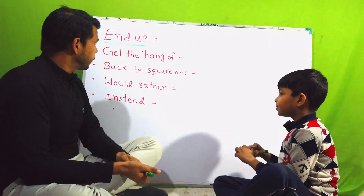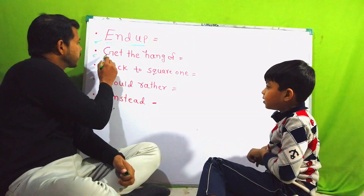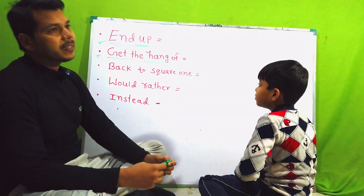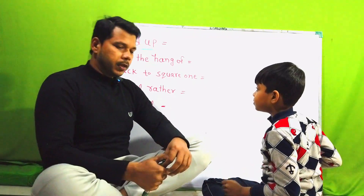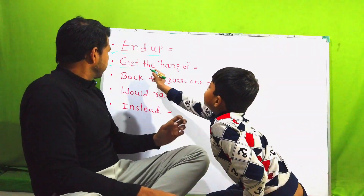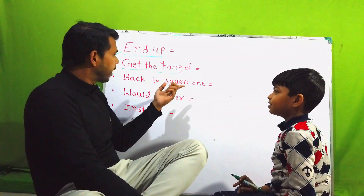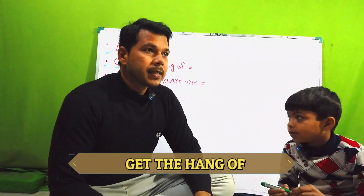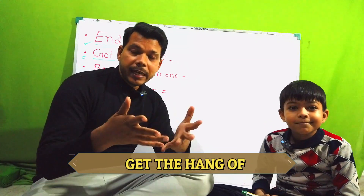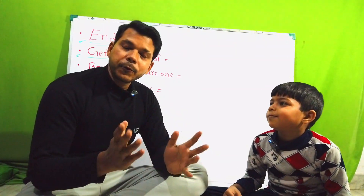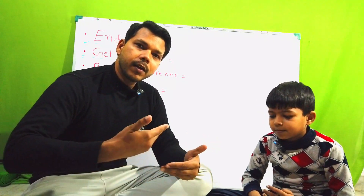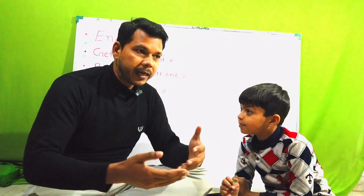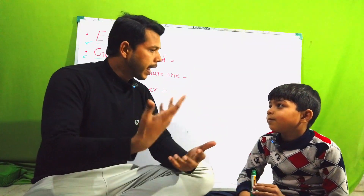Now the second structure I'm going to teach you is called 'get the hang of'. What does 'get the hang of' mean? Suppose you bought a cycle but you don't know how to ride it. So gradually you are learning how to ride — it means you are getting the hang of it. And finally when you have learned it, it means you have got the hang of it.